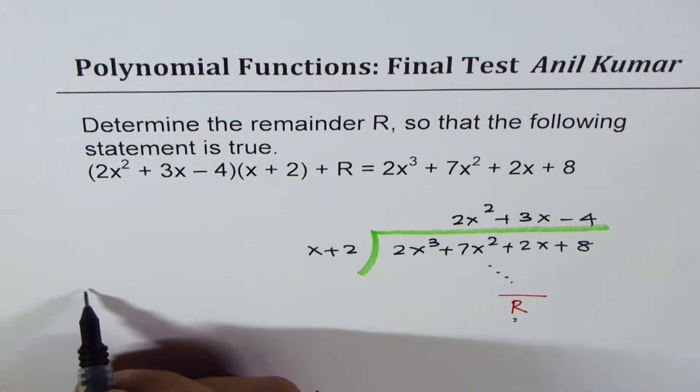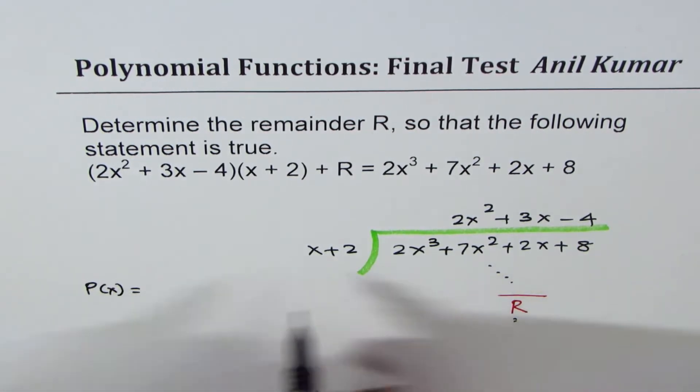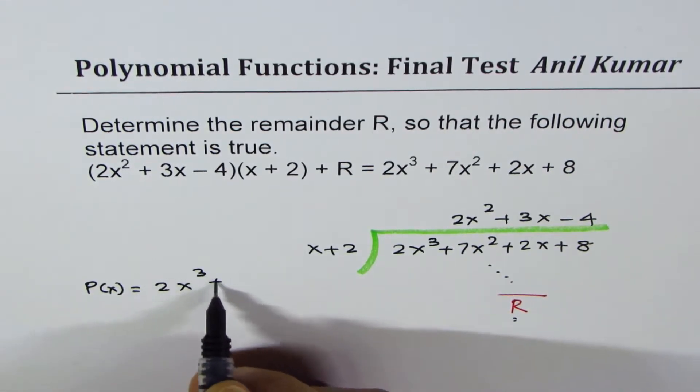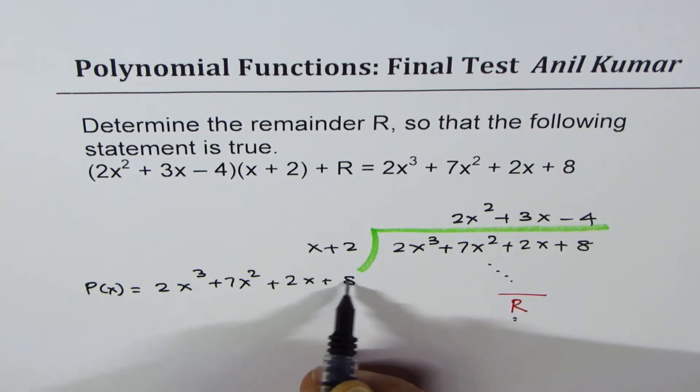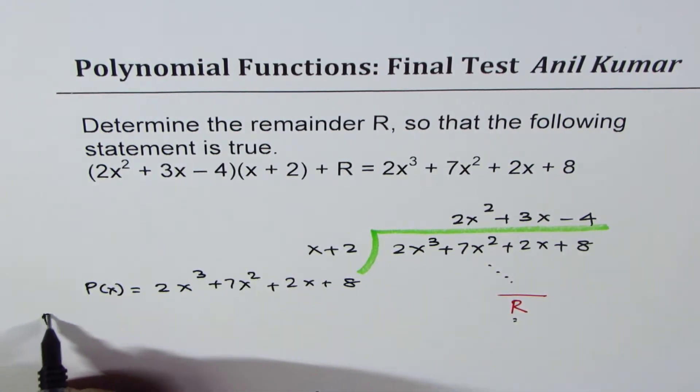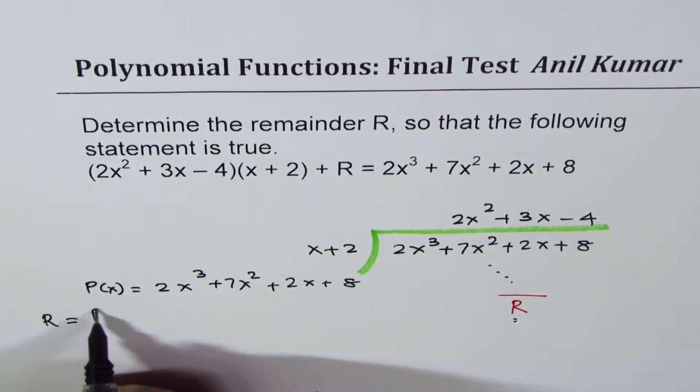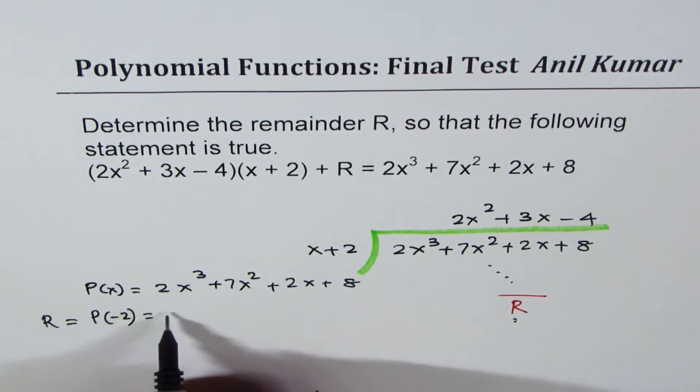So what we are saying is that consider the polynomial function, let's say, P of x equals 2x cubed plus 7x squared plus 2x plus 8. So remainder R is actually equal to value of this function at x equals minus 2. So substitute minus 2 here.